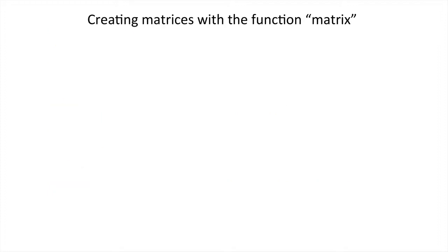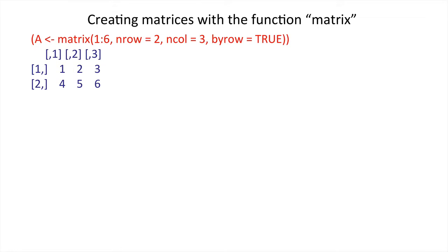There are other ways to create matrices other than combining vectors. One way is to simply use the function matrix. So here we can see that A is defined by this function matrix. The elements are one to six, there are two rows, three columns, and we're filling the matrix by rows. When we define a matrix in that way, this is what we get: one, two, three and then four, five, six.